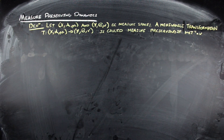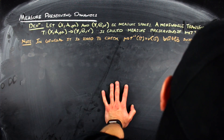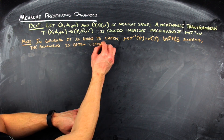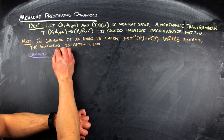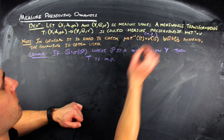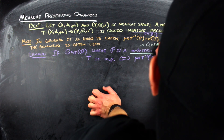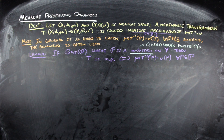Even though this is hard to check directly, there is a technical lemma that says if you have a pi system that generates the entire sigma algebra, then you can just check this equality on the pi system. A pi system is just a collection of sets that are closed under finite intersections.